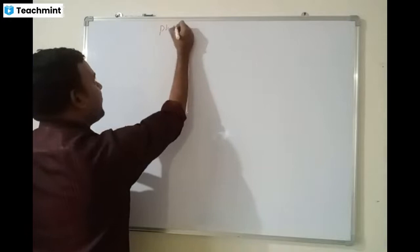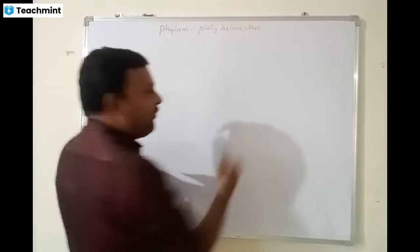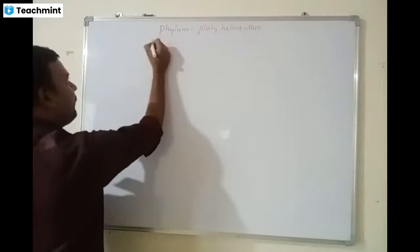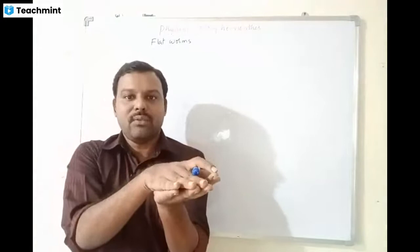Phylum Platyhelminthes — these are called the flatworms. The Platyhelminthes are called flatworms because they have a dorsoventrally flattened body.